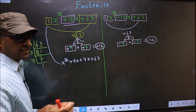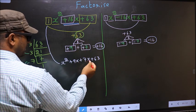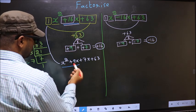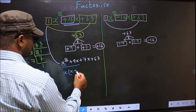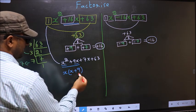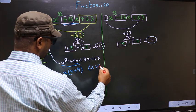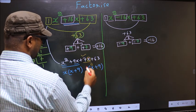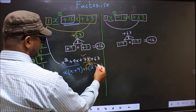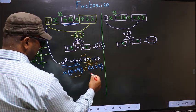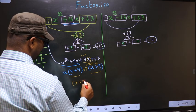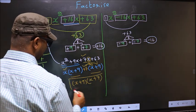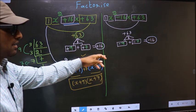In place of plus 16x we have written this. Now from these two terms, what can be taken out common? x. So here you get x plus 9. Now whatever you got here, here also you should get the same thing. So outside you get plus 7. Now you take out x plus 9 as common, so here you have x and here plus 7. The answer is (x plus 9)(x plus 7).